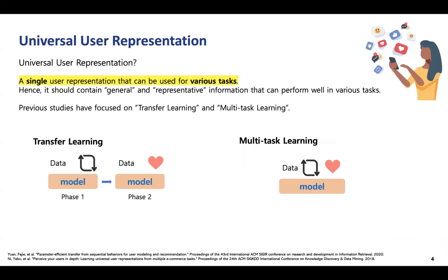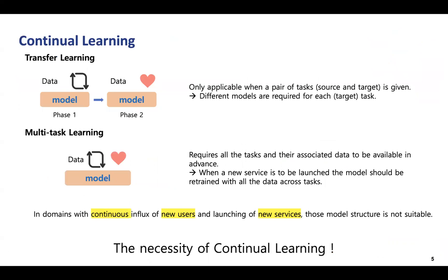Previous studies have focused on transfer learning or multi-task learning methods. However, transfer learning requires different models for each task, and multi-task learning must retrain all tasks when new services emerge. These structures are not suitable for domains with a continuous influx of users and new services.